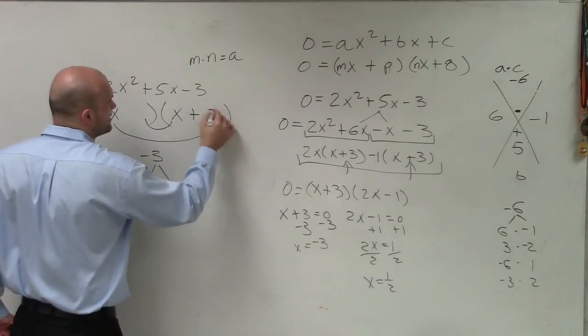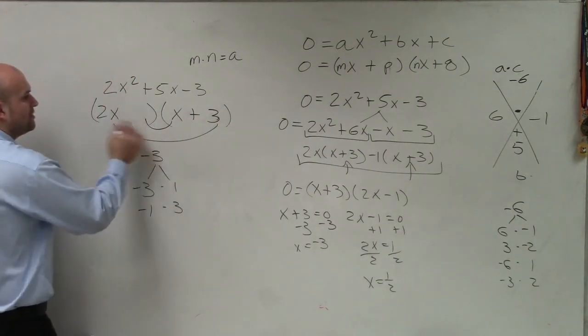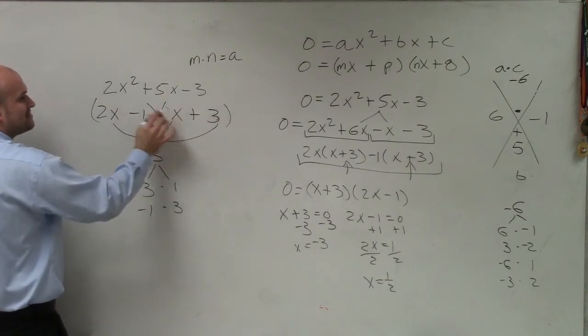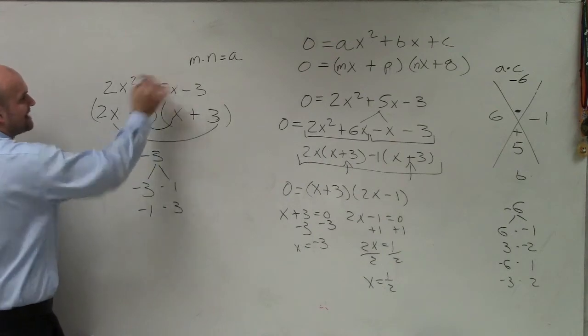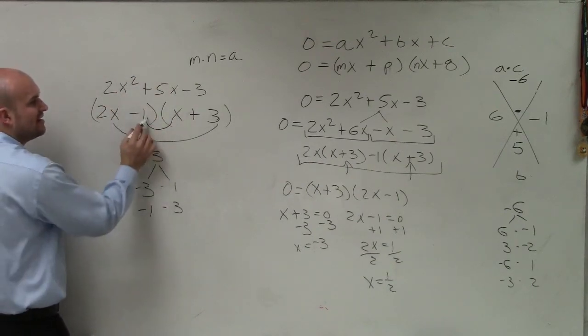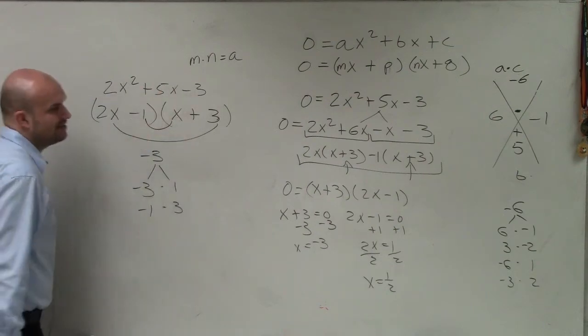And by doing that, what we notice that the only way that we can do this would be the 2x times 3, which would give us 6x, and then negative 1 times x, which would give us negative 1x. Those middle terms add to give us 5x. I already know my first two terms multiply to give me 2x². And my last two terms multiply to give me negative 3.